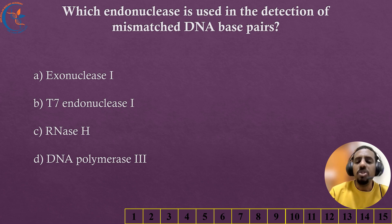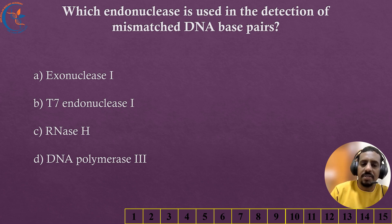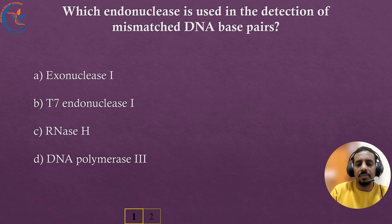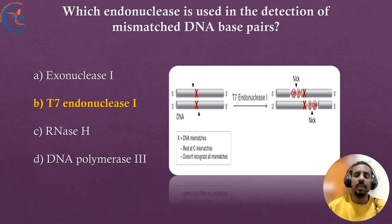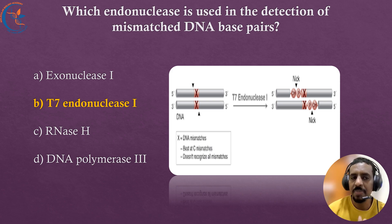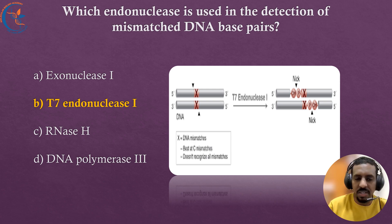Which endonuclease is used in the detection of mismatched DNA base pairs? The correct answer is Endonuclease I. Endonuclease I is used to detect and cleave mismatched DNA base pairs, making it useful in mutation detection.